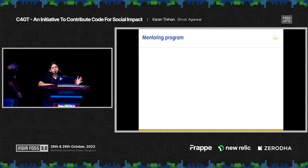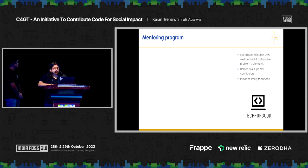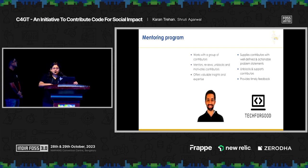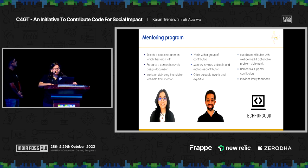In the mentoring program, Tech for Good supplies contributors with well-defined, actionable problem statements and supports them. Abhishek mentors, reviews, unblocks, and motivates contributors, offering valuable insights and expertise. Janhvi prepares a comprehensively designed proposal document for her contributions and works on delivering solutions with help from her mentors and organization.